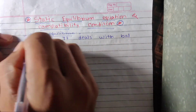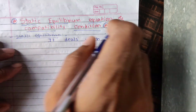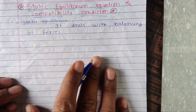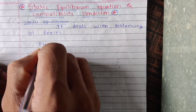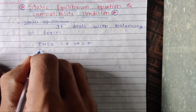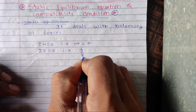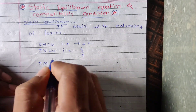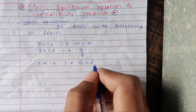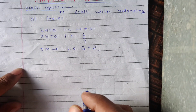Static equilibrium deals with the balancing of forces. In a structure there are three types of reactions: horizontal reaction, vertical reaction, and moment reaction. Static equilibrium equations are very essential for balancing the structure.